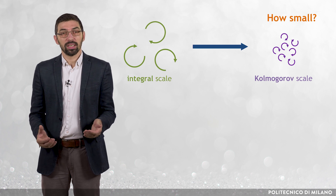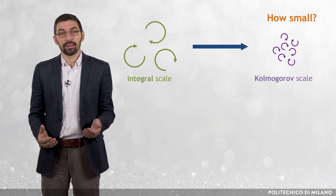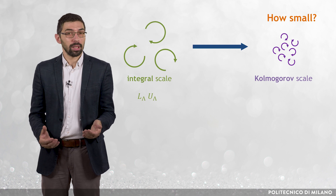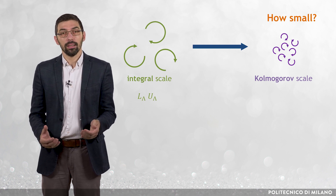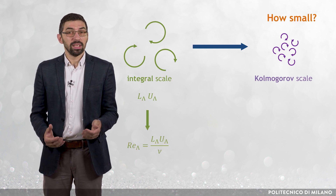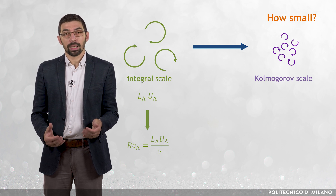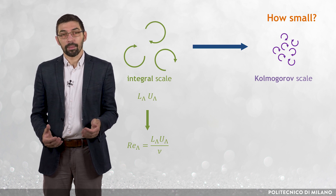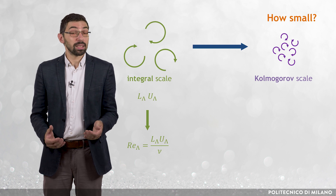Consider a turbulent flow with characteristic length at the integral scale, L_Λ, and characteristic velocity at the integral scale, U_Λ. The integral scale Reynolds number, R_Λ, can be defined as L_Λ times U_Λ divided by the kinematic viscosity of the fluid, ν.